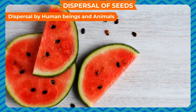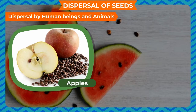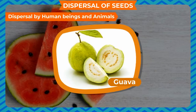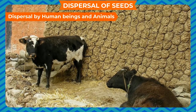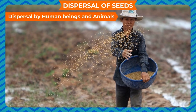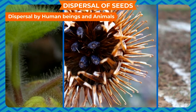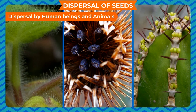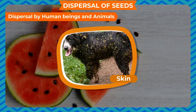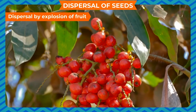Dispersal by humans and animals: humans and animals eat fruits and throw away the seeds after eating fruits like mangoes, oranges, apples, cherries, and plums. The small hard seeds of guava are passed out of the body with waste. Seeds of many plants have stiff hairs, hooks, or spines that stick to our clothes or the fur and skin of animals, and are carried far away.